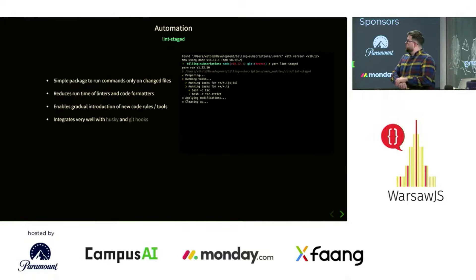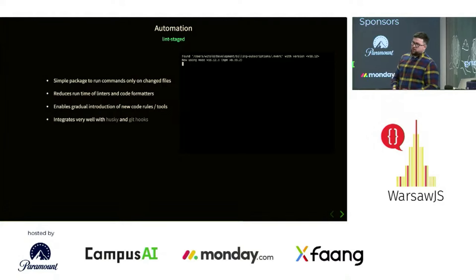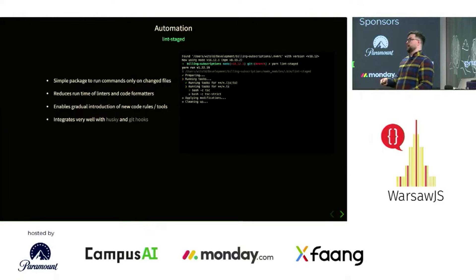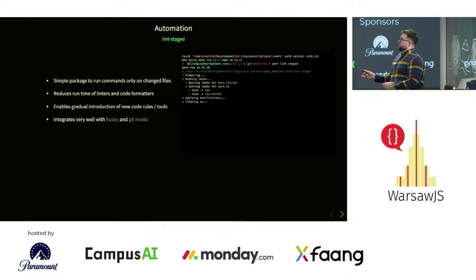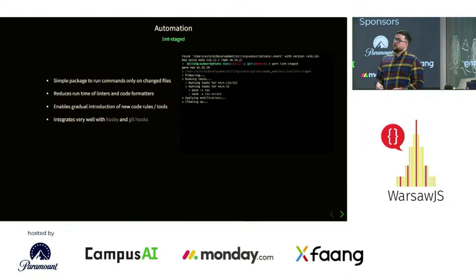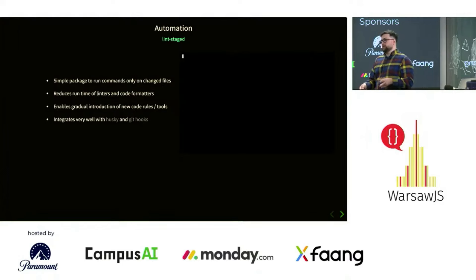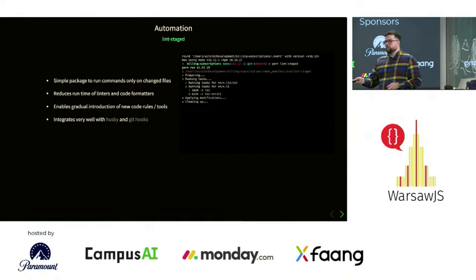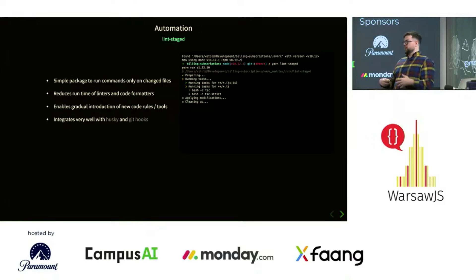Another tool I find very useful is lint-staged. Lint-staged gives you the ability to apply commands only on the files that are changed in your commit. That way you can apply ESLint, Prettier, or any other tool only on the files you changed — meaning it just runs faster. It also gives you a superpower when introducing new tools: you only apply them to the files that actually changed, so you don't have to rewrite your whole codebase with new standards all at once — just fix things as you go.